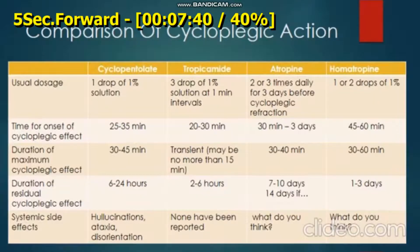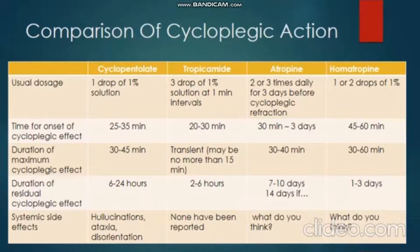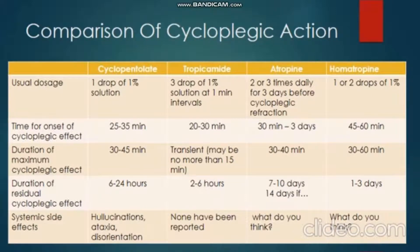The cycloplegic agents are as follows. Cyclopentolate: the dosage is one drop of one percent solution. Time of onset of cycloplegic effect is about 25 to 35 minutes. Duration of maximum cycloplegic effect lasts up to 30 to 45 minutes. Duration of residual cycloplegic effect lasts up to 6 to 24 hours. Systemic side effects include hallucinations, sometimes ataxia or disorientation.